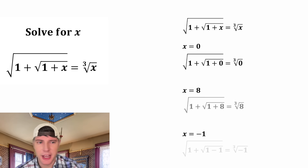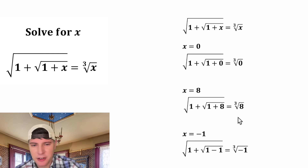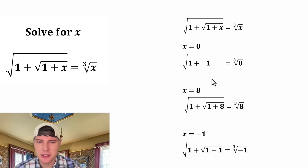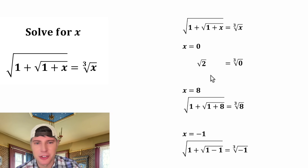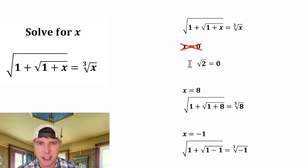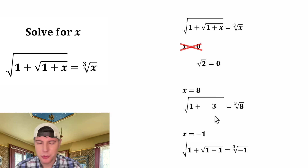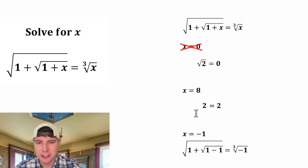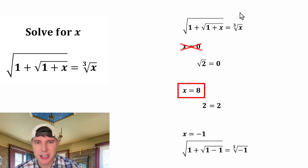Now let's test our three answers. For x equals 0: 1 plus 0 is 1, and the square root of 1 is 1, then 1 plus 1 is 2, so the left-hand side is the square root of 2. But the cube root of 0 is 0 — not true, so x equals 0 is not valid. For x equals 8: 1 plus 8 is 9 and the square root of 9 is 3; then 1 plus 3 is 4 and the square root of 4 is 2. The cube root of 8 is also 2 — this checks out. Let's put a box around it: x equals 8 is a solution.